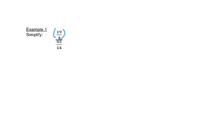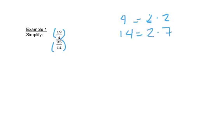Let's look at what we mean. In this complex fraction, we have a fraction on top and a fraction on the bottom. On the top we have a denominator of 4, and on the bottom we have a denominator of 14. 4 has a prime factorization of 2 times 2, and 14 has a prime factorization of 2 times 7.